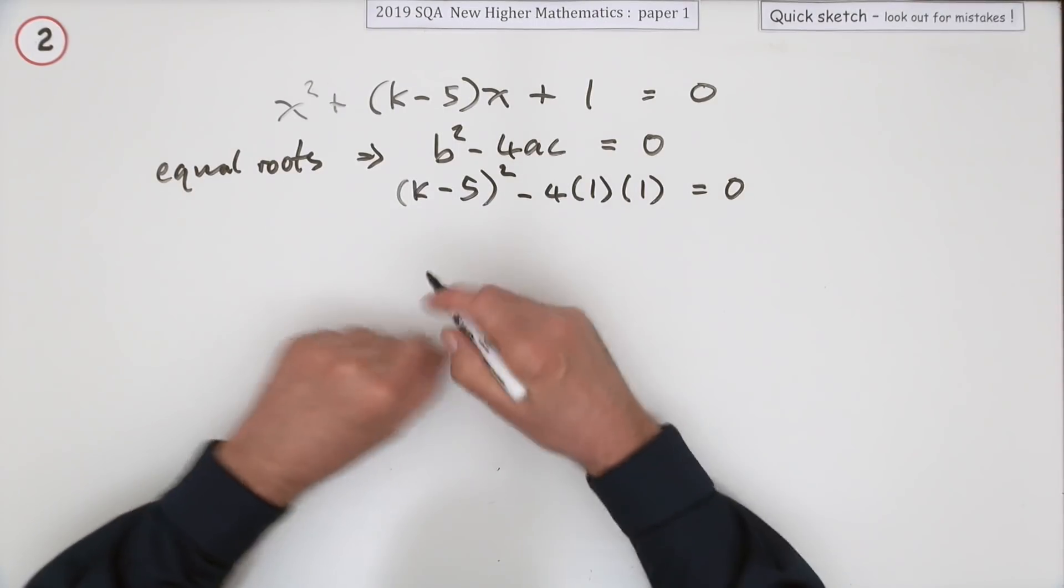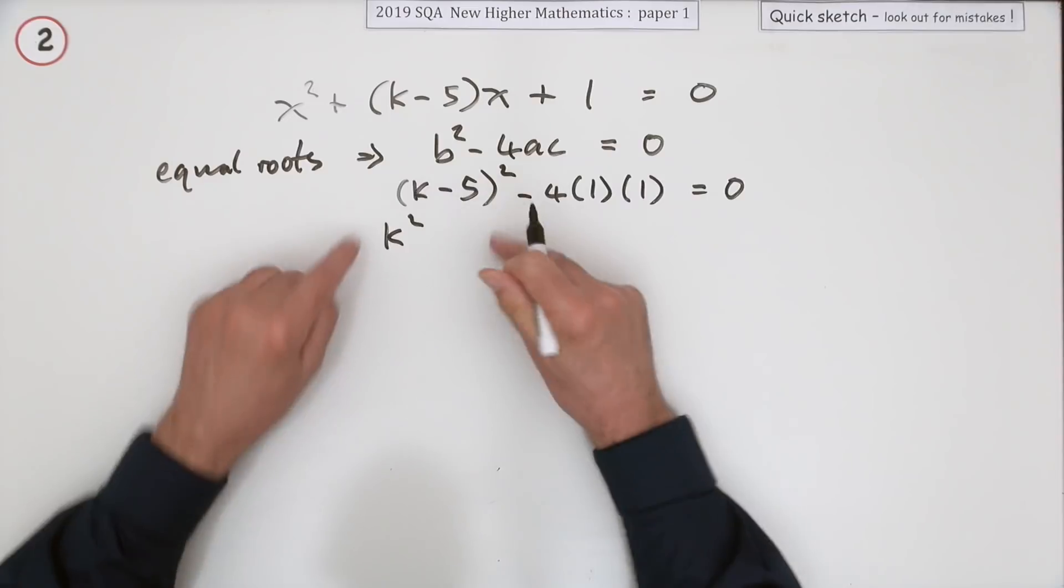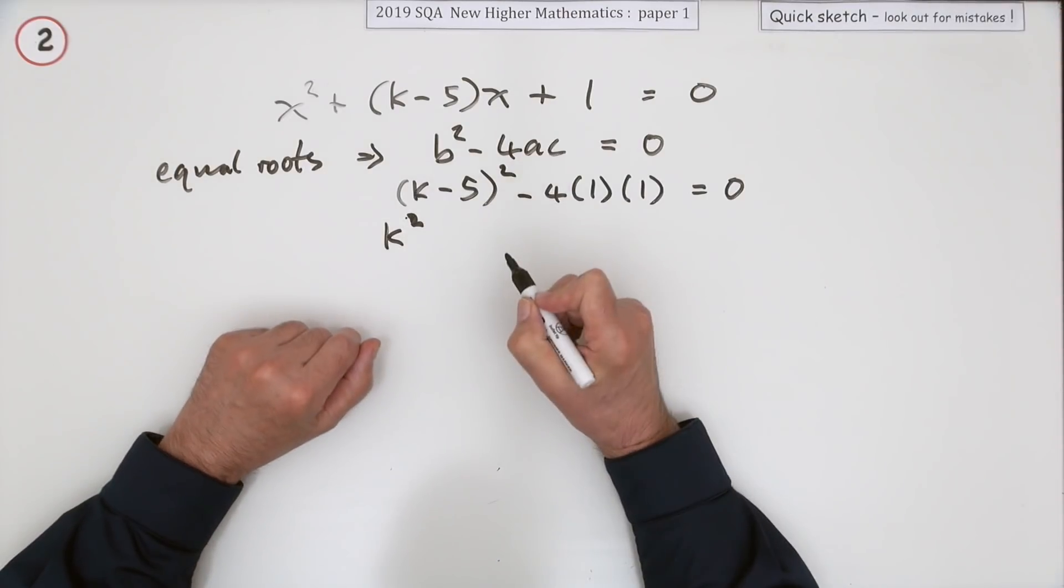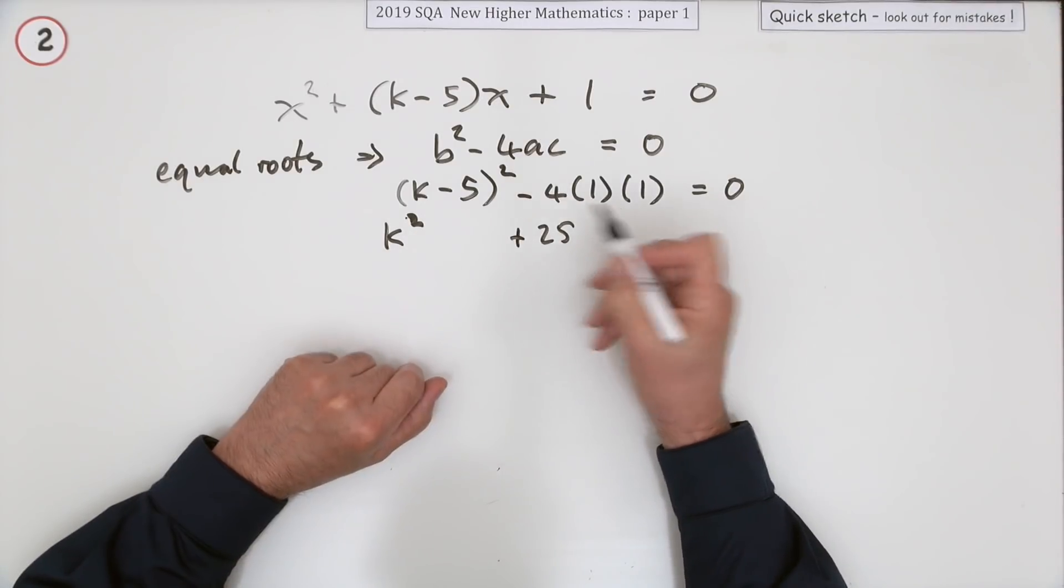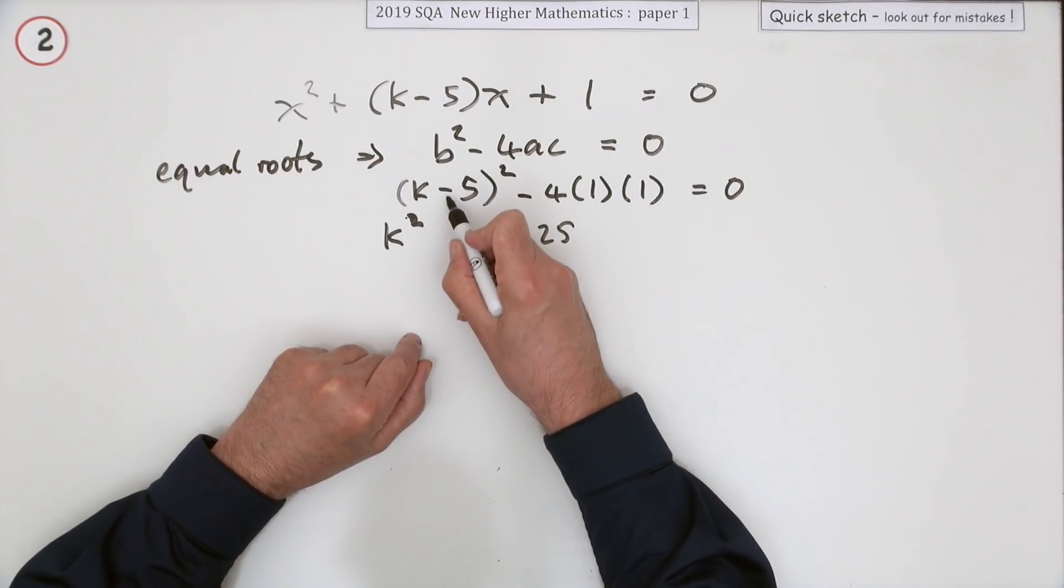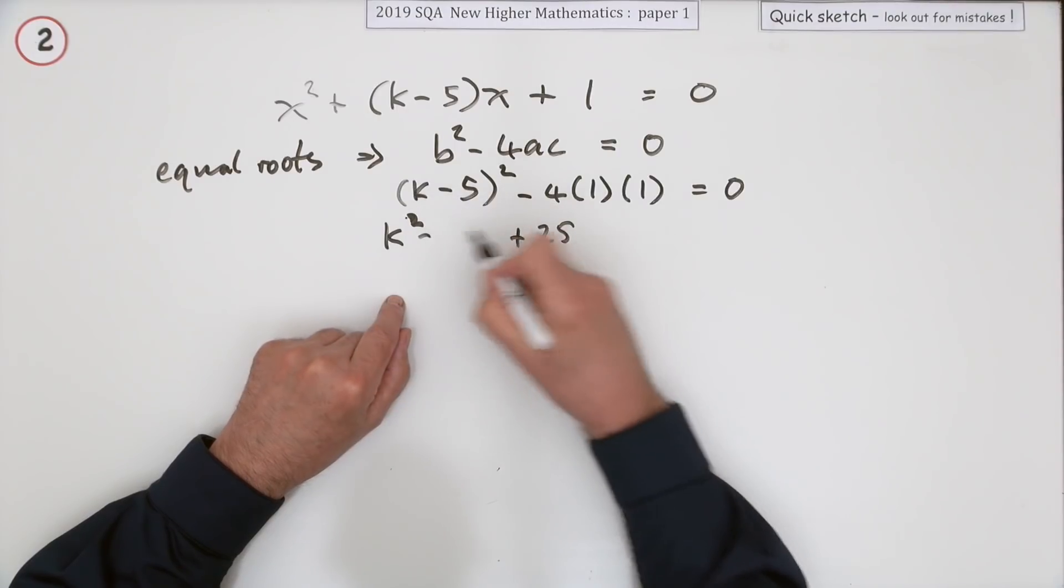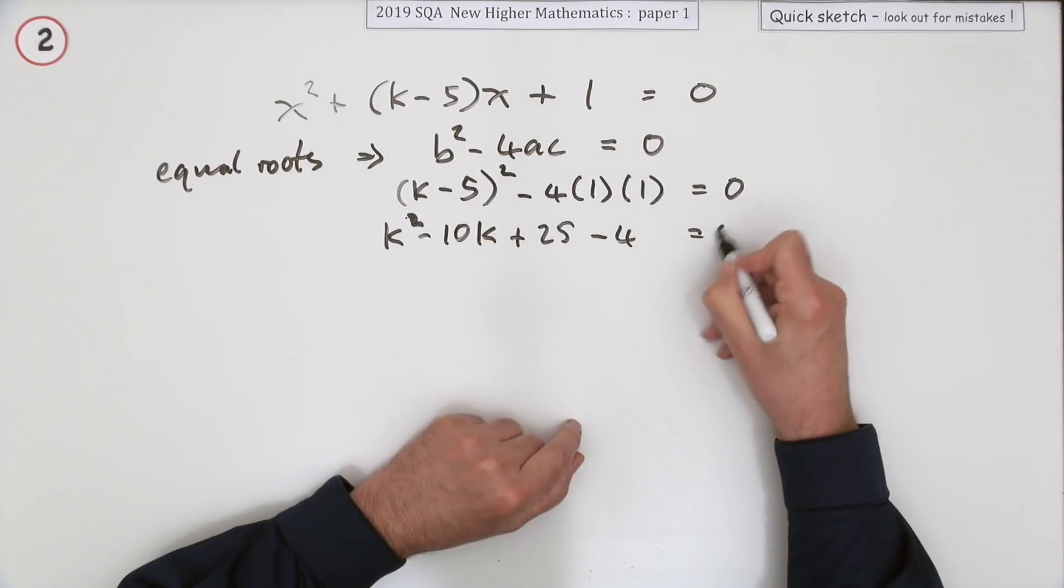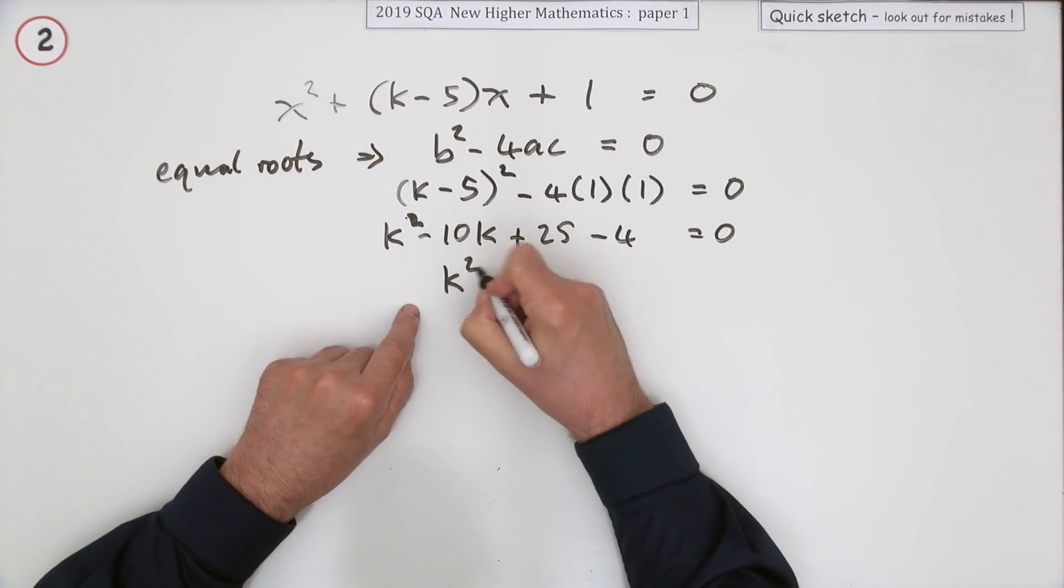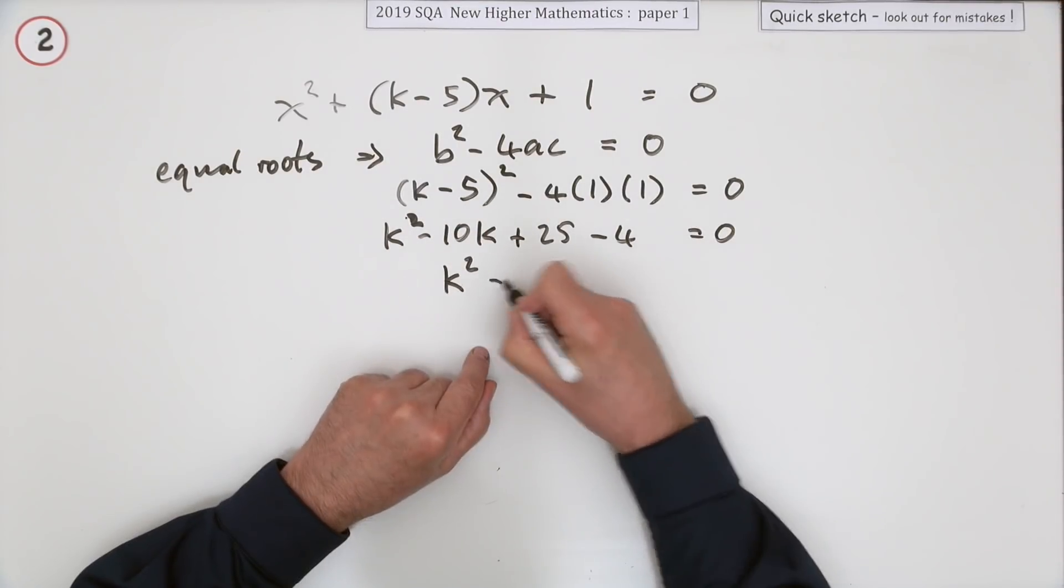Multiply it out and you'll have a little equation. So square that bracket. Square the first, square the last, which is always positive of course. Twice the product, the product is negative 5k, doubling that negative 10k, and that's a minus 4.